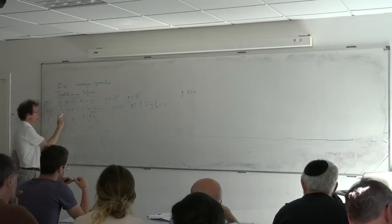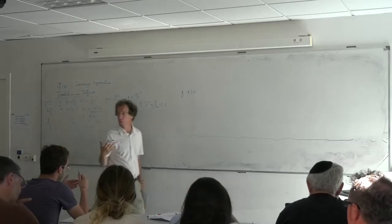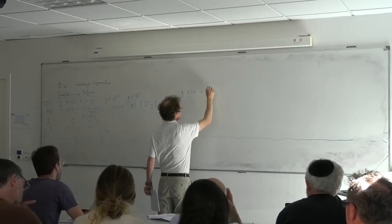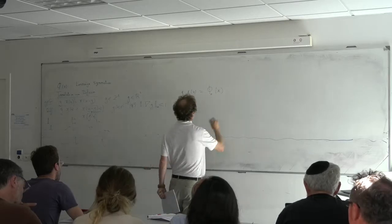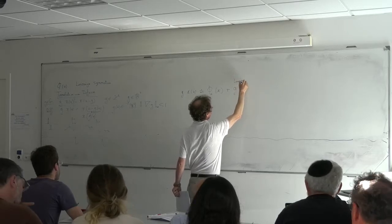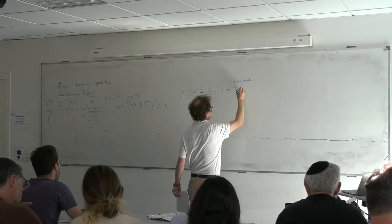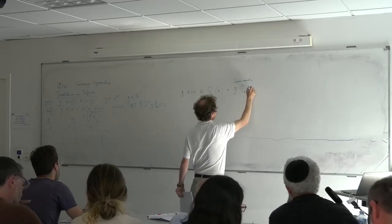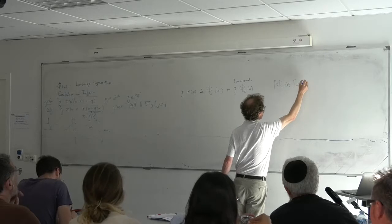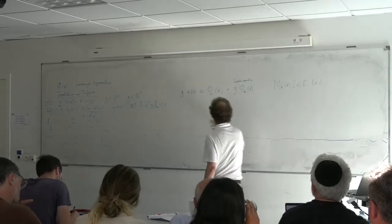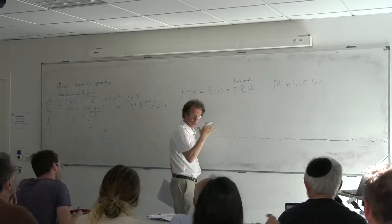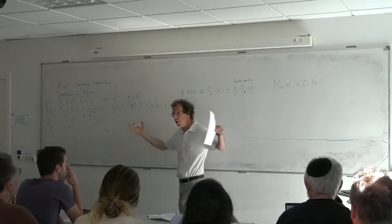In the case of translation, you have X of U minus G, and if you go brutally, you may say this is a first-order Taylor: U minus G, X prime of U. The only problem is that X is not differentiable, so you cannot do that kind of thing. But still, it's the spirit. If you want to do that locally, you'd like to have some kind of local Taylor series.